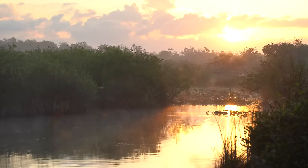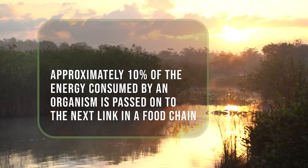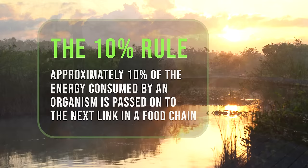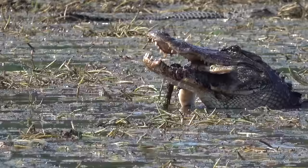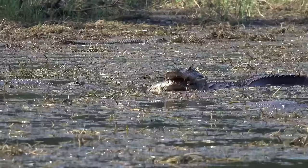In fact, the rule of thumb is that only about 10% of the chemical energy consumed by an organism passes on to the next level. This is called the 10% rule. So basically, there can't be too many links in the chain, or the predators at the top of the food chain won't be able to get enough of the energy they need to survive and grow.